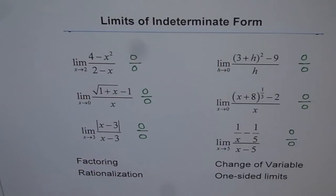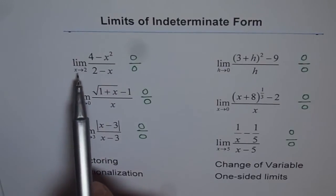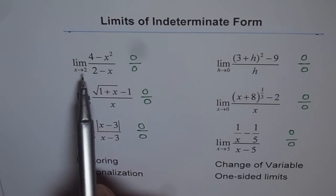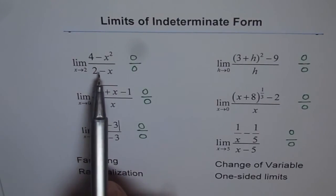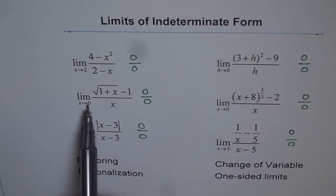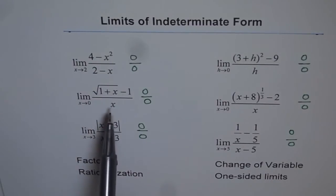So what we noticed in all these examples is that when we substitute the limiting value, we get 0 in the numerator and 0 in the denominator. It is important to note that 0 over 0 is not mathematically defined, but it gives you an idea that if it is approaching 2, then x minus 2 is a factor of both numerator and denominator. If it is approaching 0, x is a factor of both numerator and denominator.